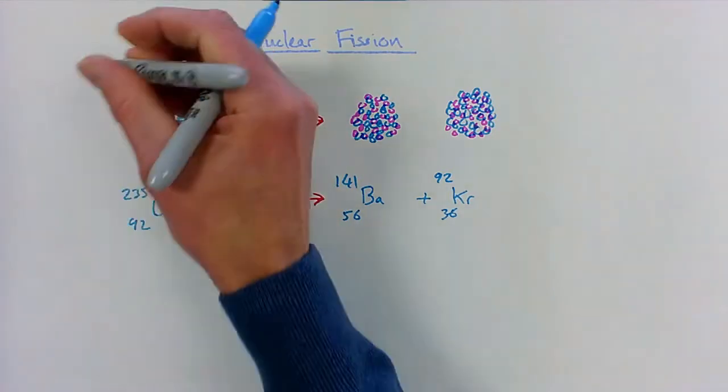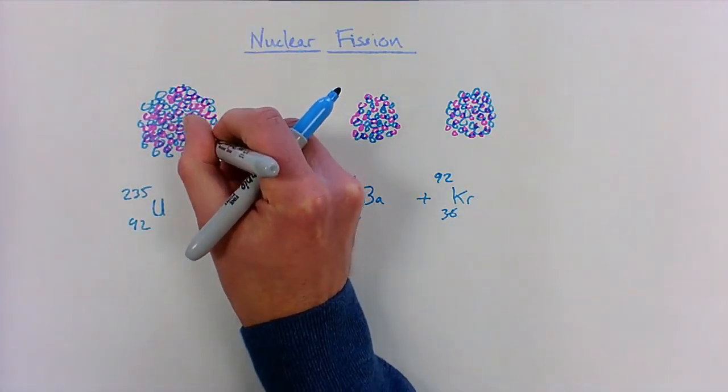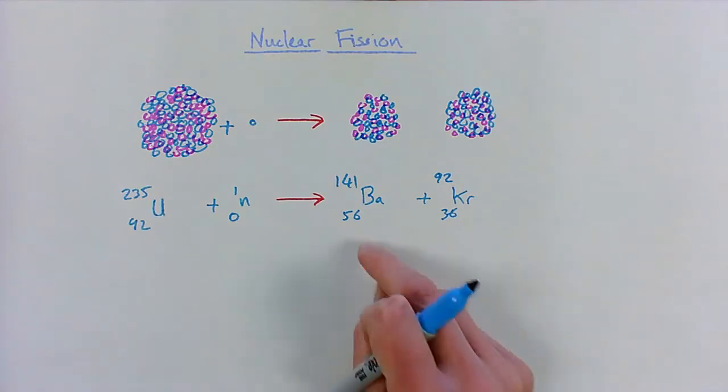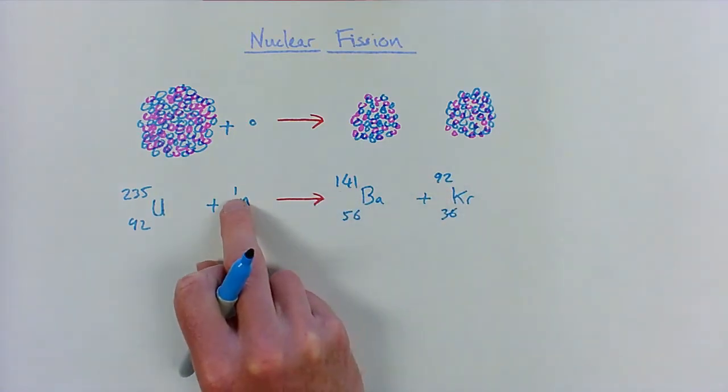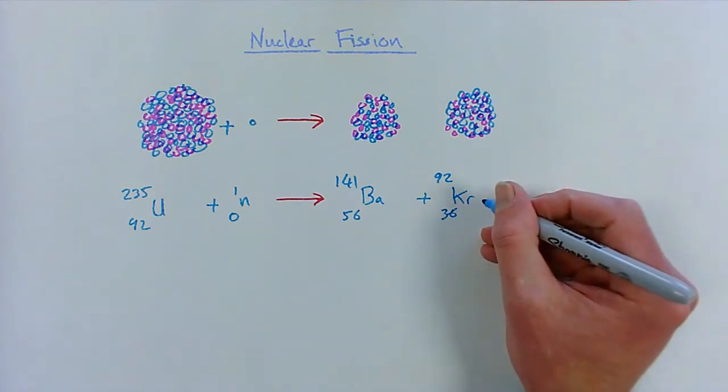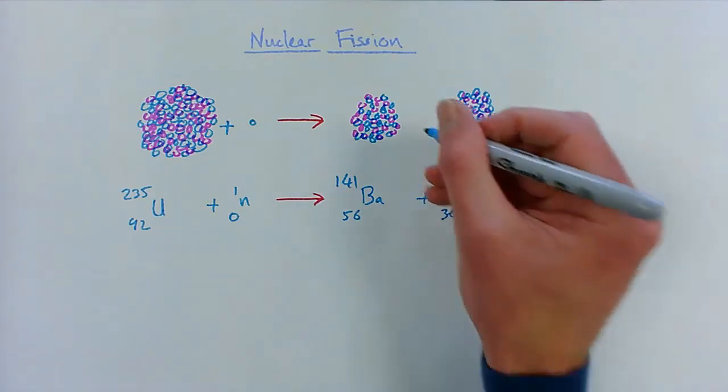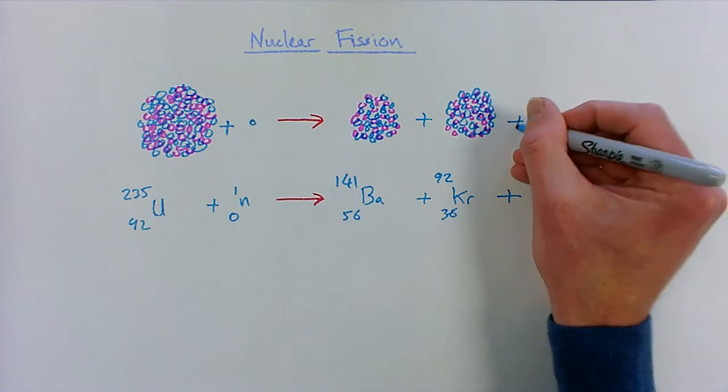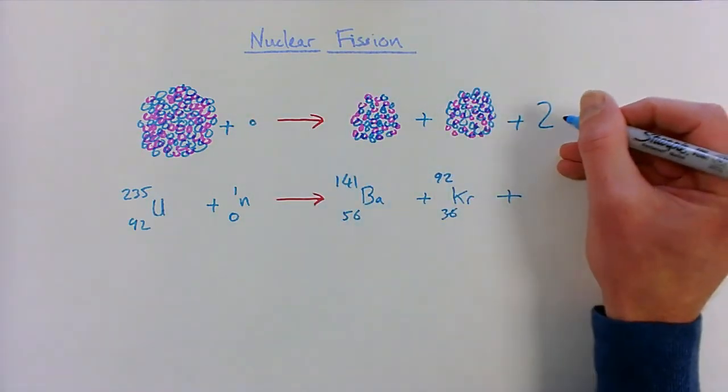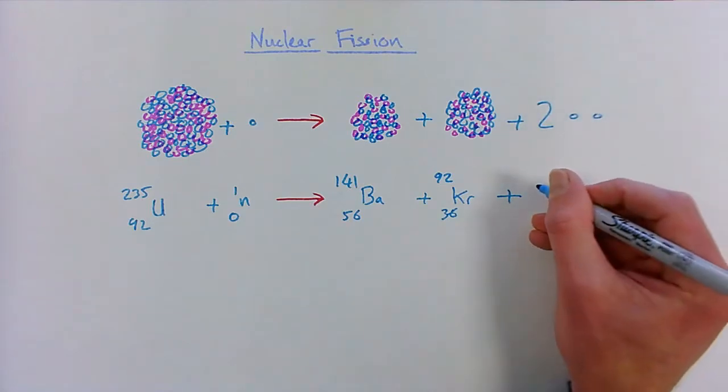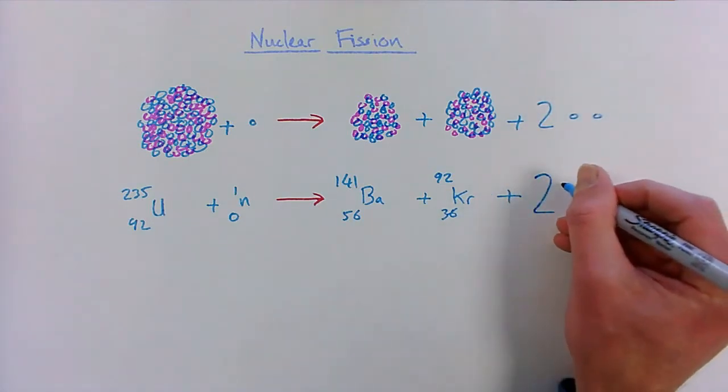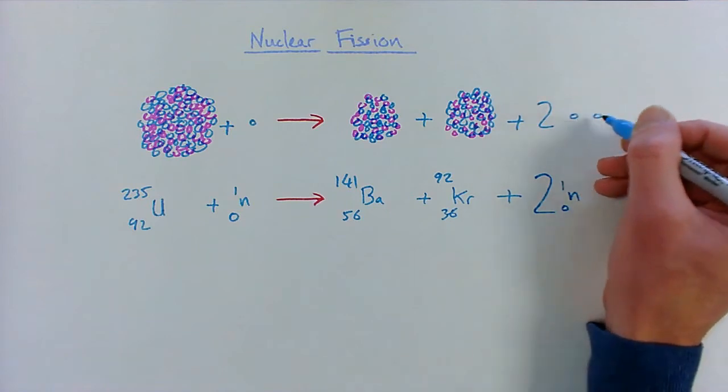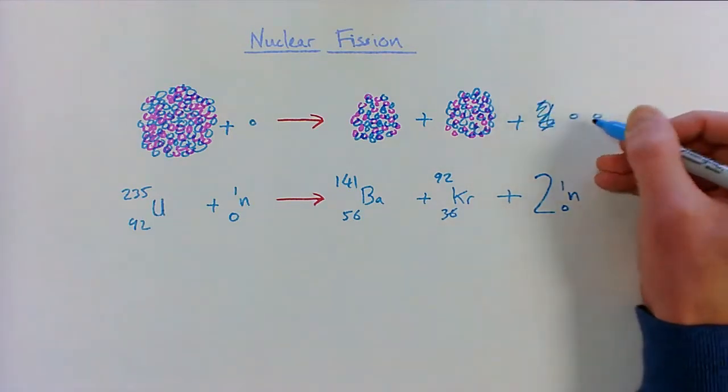We end up with a couple of smaller daughter nuclei. Now if we add up the mass numbers, we might fall short of a few neutrons. What actually goes on in this process is that as well as these daughter nuclei being produced, you can end up with two or three extra neutrons being produced. So let's draw one, two, and if we're doing a chemical equation we'd write it like this - so two more of these being produced.